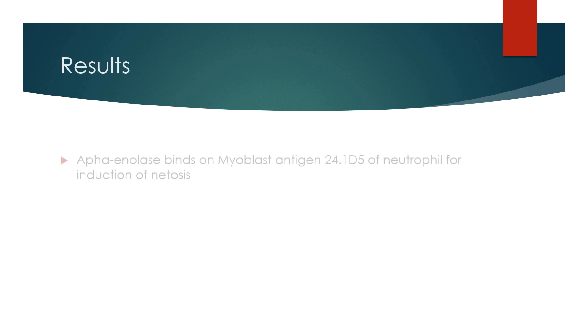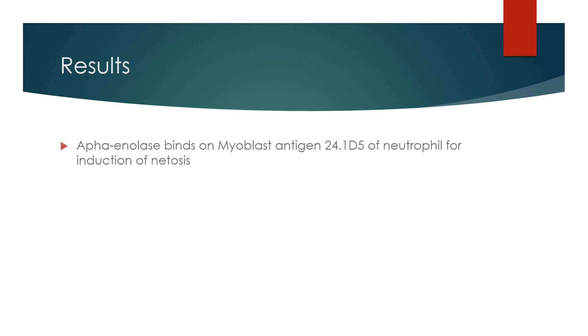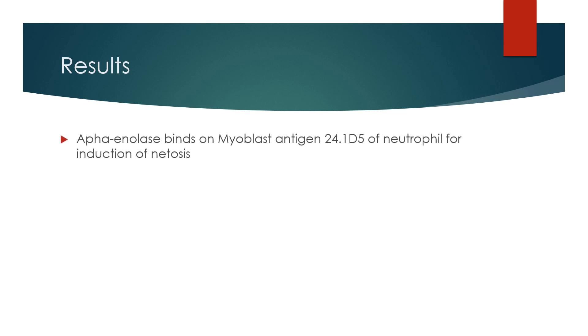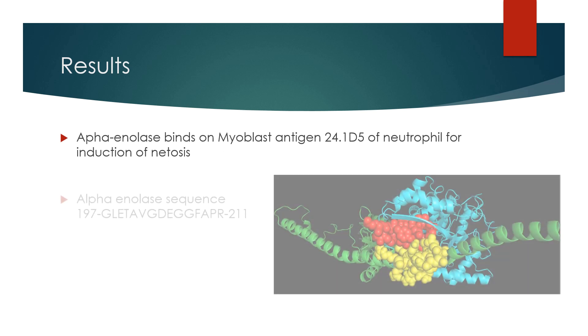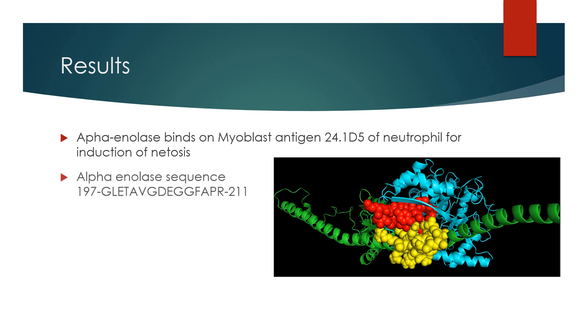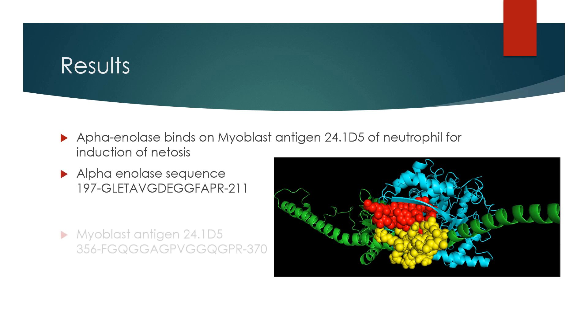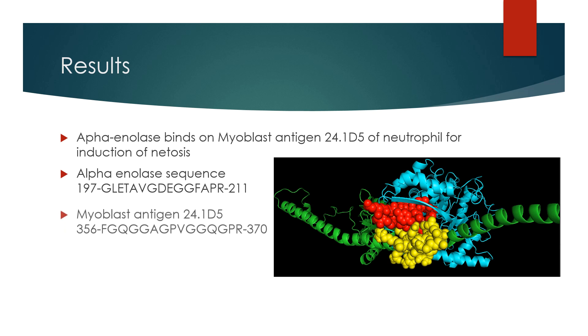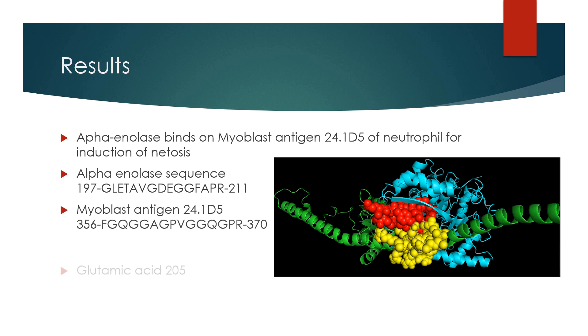Alpha enolase binds on the myoblast antigen of neutrophils for induction of NETosis, and this antigen is only present on neutrophils. The figure represents protein-protein interaction. The alpha enolase sequence from amino acid 197 to 211 is considered the potential region for induction of NETosis. Moreover, the glutamic acid residue at position 205 of alpha enolase is found to be the active site residue.